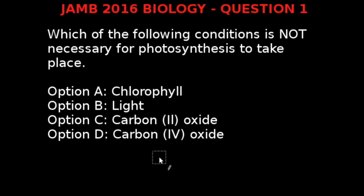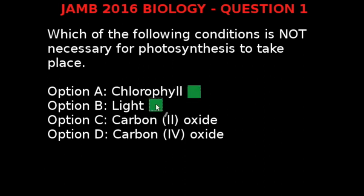Photosynthesis is the process by which green plants manufacture their food in the presence of sunlight. It takes place through the use of carbon dioxide and water in the presence of sunlight. Carbon monoxide is a poisonous gas and has no use in photosynthesis. We require chlorophyll, light, and carbon dioxide, but we do not need carbon monoxide. Therefore, our correct answer is Option C.